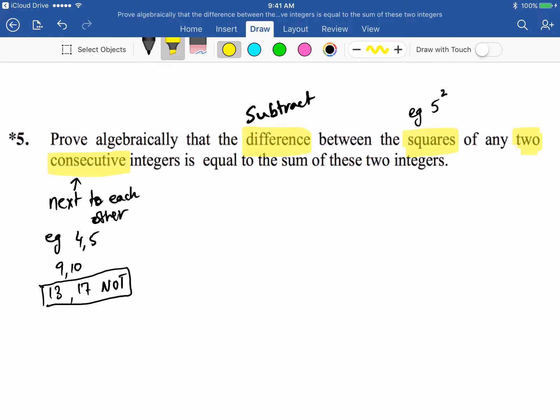Then another thing we need to look at is equal to sum. Sum means addition of these two integers.